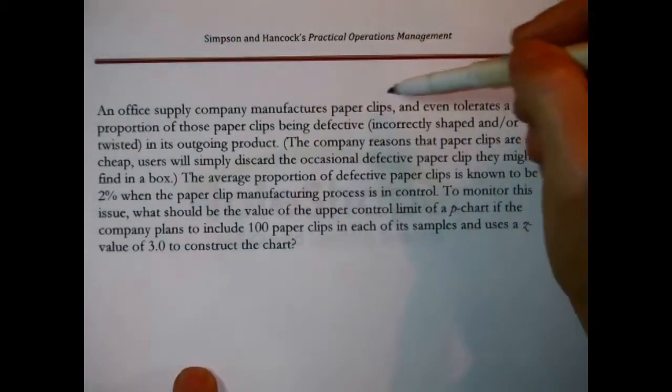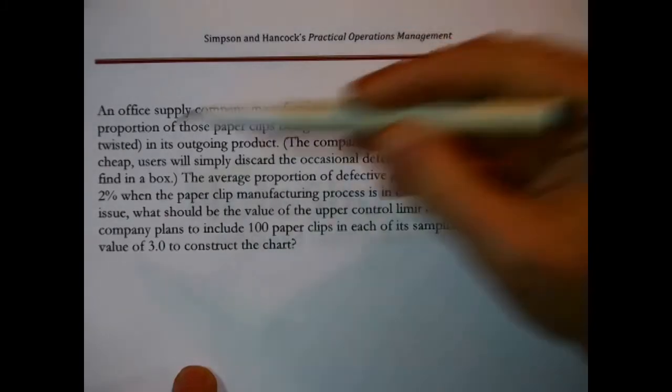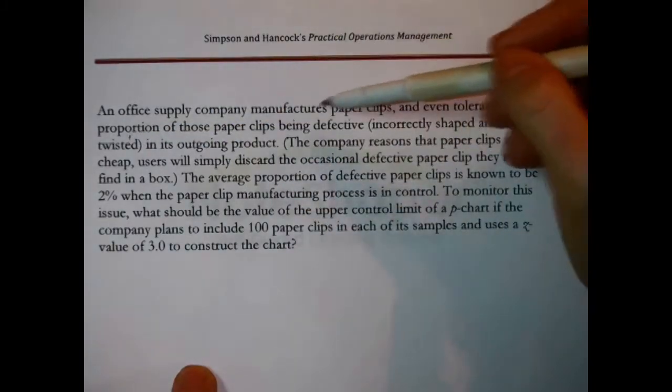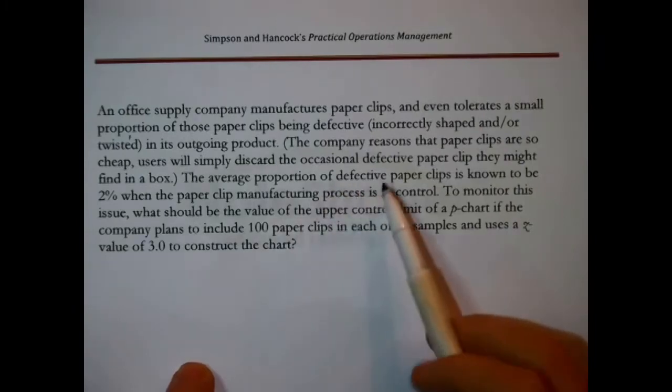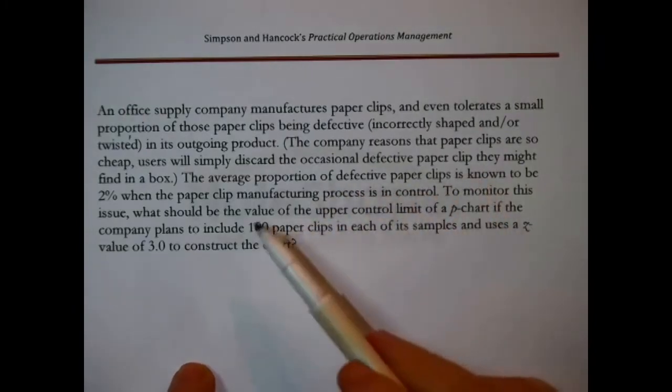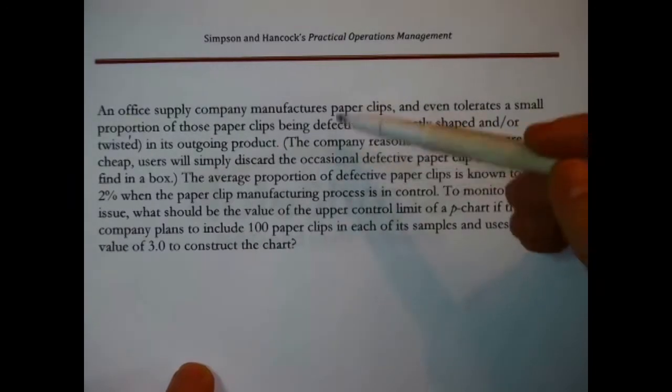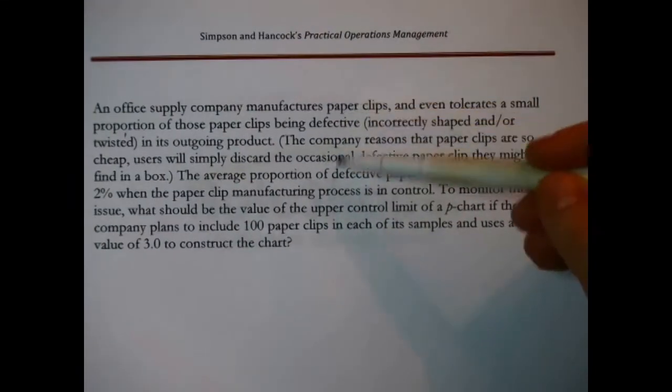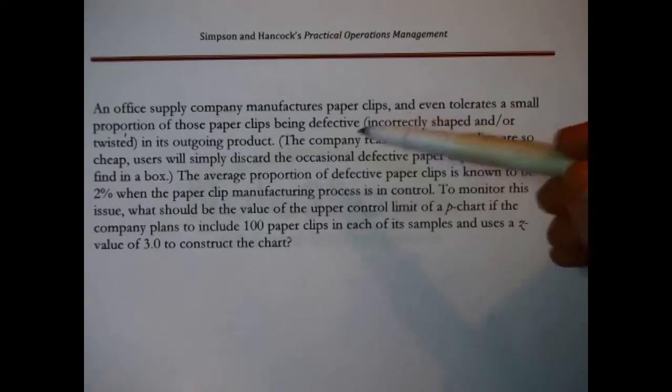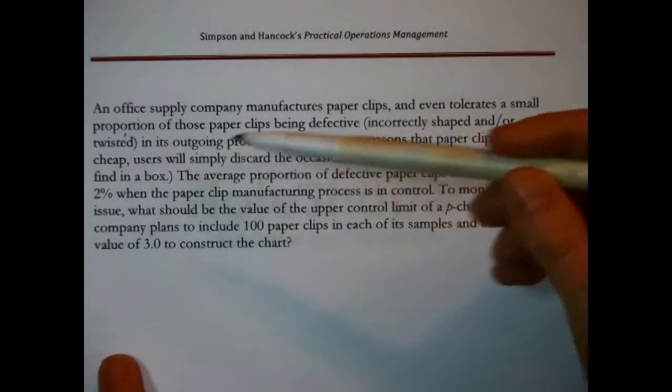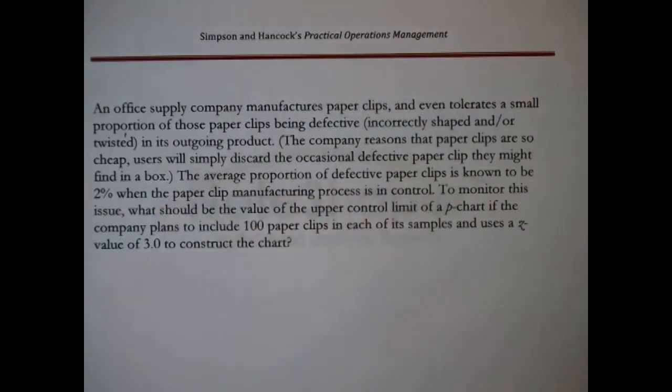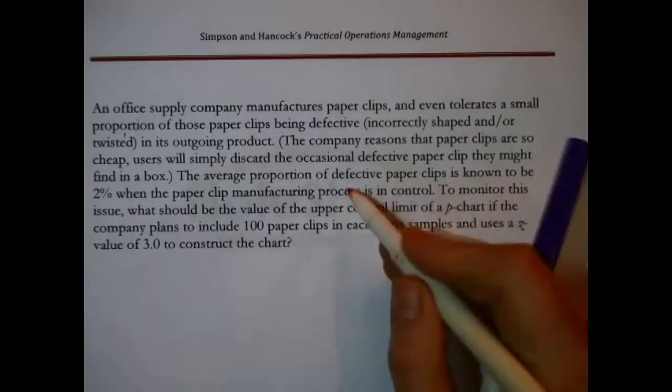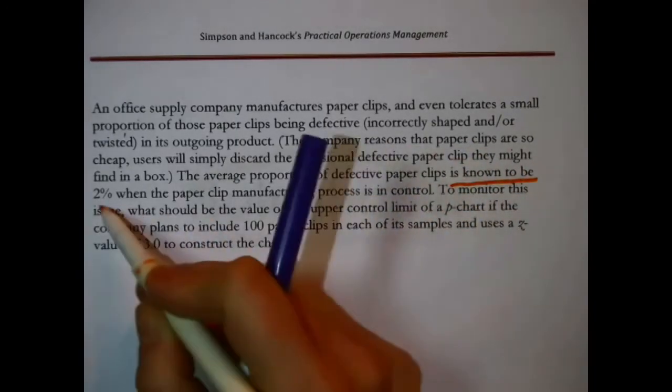An office supply company manufactures paper clips and even tolerates a small proportion of these paper clips as being defective, incorrectly shaped or twisted in its outgoing product. The company reasons the paper clips are so cheap, users will simply discard the occasional defective paper clip they might find in the box. This is actually not uncommon in high volume, extremely cheap items. The average proportion of defective paper clips is known to be 2%. That is a reading we are going to need.